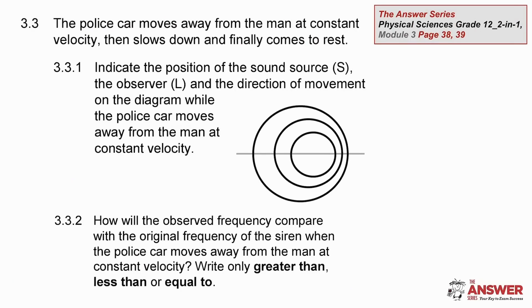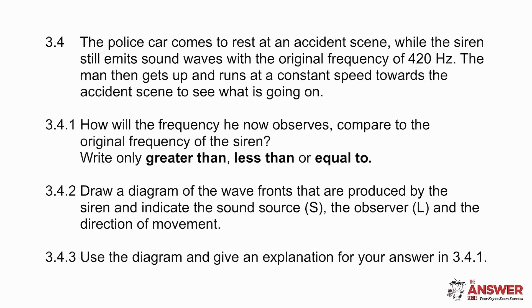Here is the same diagram. The police car is always at the center of the circle and the smallest circle is the newest wavefront. You place the source and the listener using these letters on the diagram. Then use your familiarity with the Doppler effect to decide which of these options is correct. Well, we really are squeezing as much as we can from this scenario.